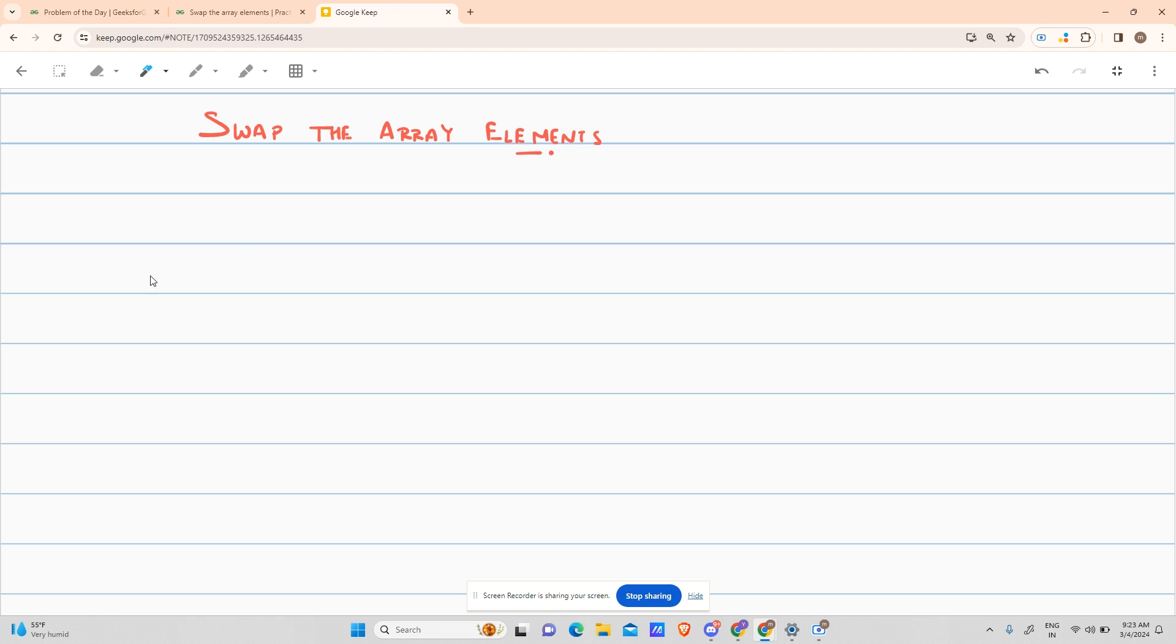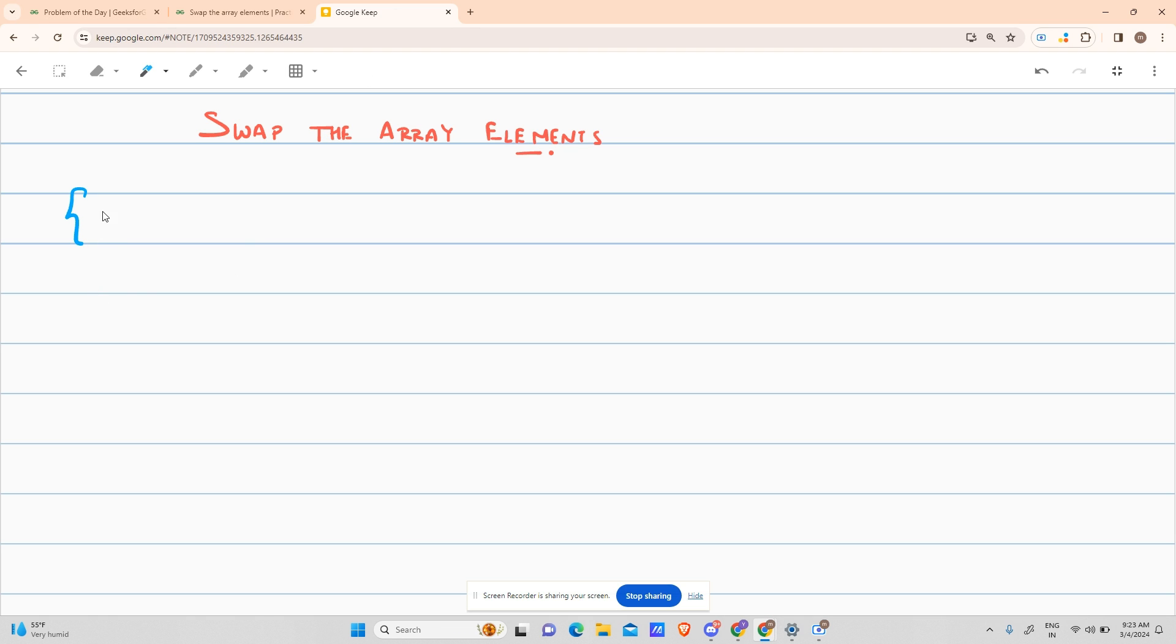The problem says suppose you have an array 1, 2, 3, 4, 5. You have to swap every ith element with every i+2th element. So what does the question say? Suppose you're standing here at the first step, i is 0, i+2 is 2, so i+2 is the third element. You swap these two. The array becomes 3, 2, 1, 4, 5. Am I clear?